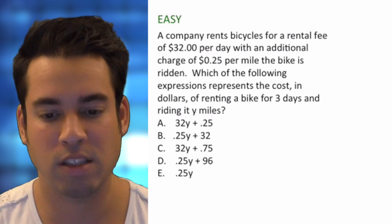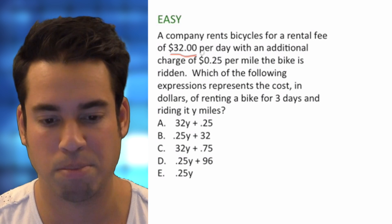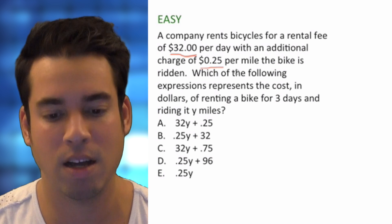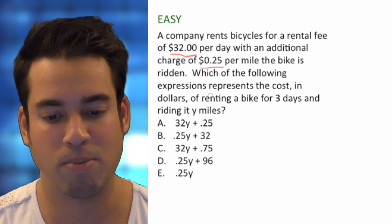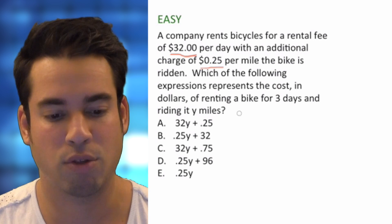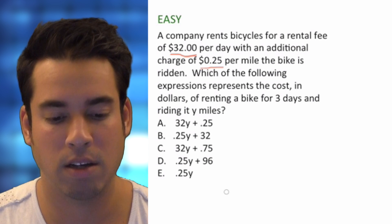So it says a company rents bicycles for a rental fee of $32 per day with an additional charge of 25 cents per mile the bike is ridden. Which of the following expressions represents the cost in dollars of renting a bike for three days and riding it Y miles.